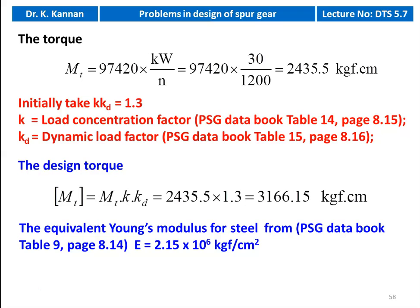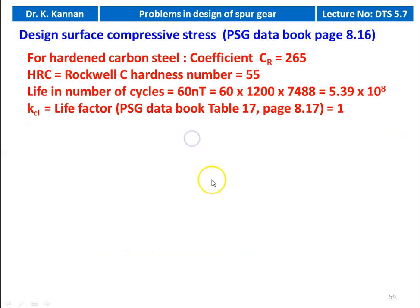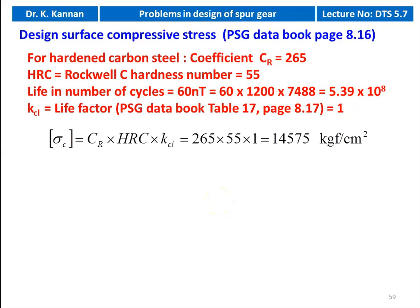We take the equivalent Young's modulus for steel: E equal to 2.15×10^6 kilogram force per centimeter square. Psi (B/A) equal to 0.3. Design compressive stress for C40 carbon steel: coefficient CR equals 265, Rockwell C hardness number is 55. Life = 60 × 1200 × 7488 = 5.39×10^8, which is greater than 10^7, so life factor KCL equals 1. Design compressive stress [sigma_c] = CR × HRC × KCL = 265 × 55 × 1 = 14,575 kilogram force per centimeter square.